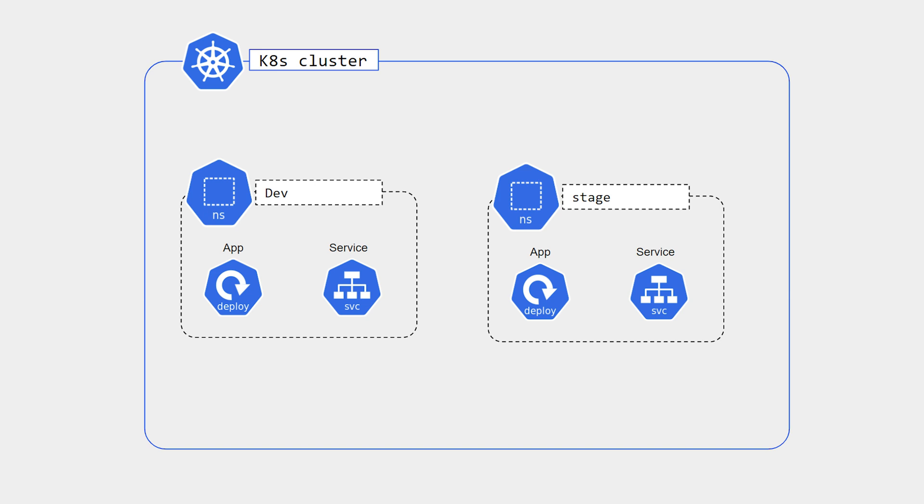If you want to use one single cluster for lower environments like dev and stage, you can use namespaces. You can create multiple namespaces for dev, stage, and QA, and deploy your applications accordingly. All dev pods can be deployed in the dev namespace, and for stage and QA you can deploy in their respective namespaces, without affecting the other applications or services.